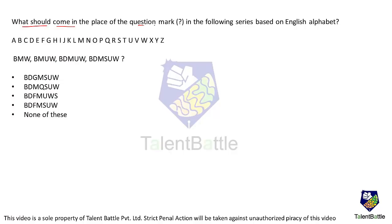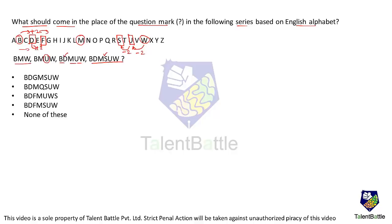Sample Q2 — Alphabet Series: The series is B M W → B M U W → B D M U W → B D M S U W. The pattern adds letters two places before the previous new addition (−2) and two places after (+2) alternately. W is given; U is two places before W; D is two places after B; S is two places before U. So the next addition must be two places after D, which is F. The answer is B D F M S U W.